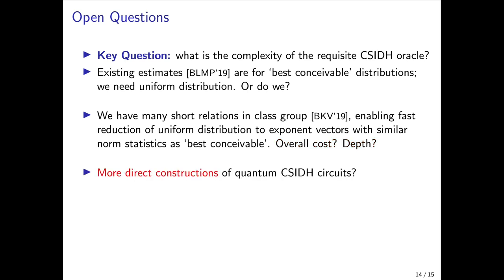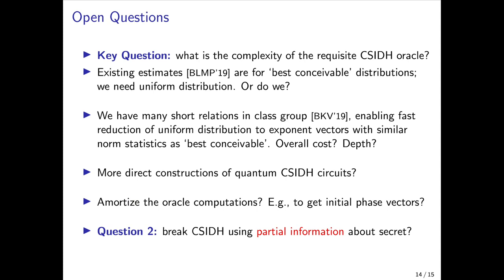Alternatively, the existing estimates for the complexity of the CSIDH oracle come from generically transforming a classical algorithm into a quantum one. If we could get more direct constructions of quantum CSIDH circuits then that would possibly reduce the complexity of the oracle. Another question is whether it's possible to somehow amortize the several oracle computations that are used in the attack to get the initial phase vectors. Another important question is whether it's possible to break CSIDH using just partial information about the secret such as is returned from just one run of the sieve.